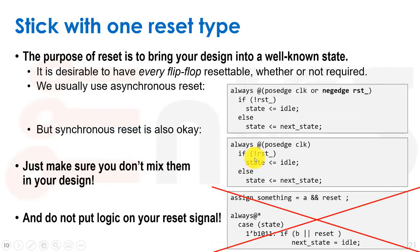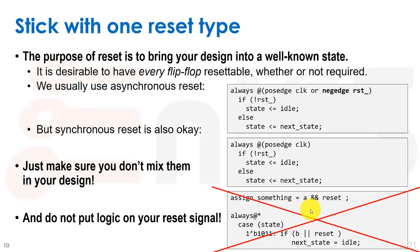We want to stick with one reset type — either asynchronous or synchronous — and not mix them. More importantly, do not put logic on your reset signal. You should not write 'assign something = a & reset' — that puts an AND gate between a signal and reset. Also, using reset on the right-hand side of a case statement is not allowed. The only place reset should appear is for resetting a flip-flop. At this level of design, never ever put logic on reset.